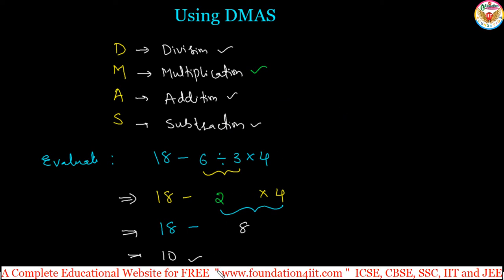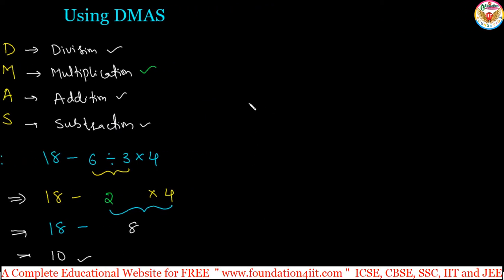Let us see one more question, as per the rule. Evaluate minus 10 plus minus 4 divided by minus 2 into 3. They mentioned the question with brackets clearly here. First, you observe the division. Division symbol is here, for this minus 4 is left side, minus 2 is right side. Bracket also they mentioned.